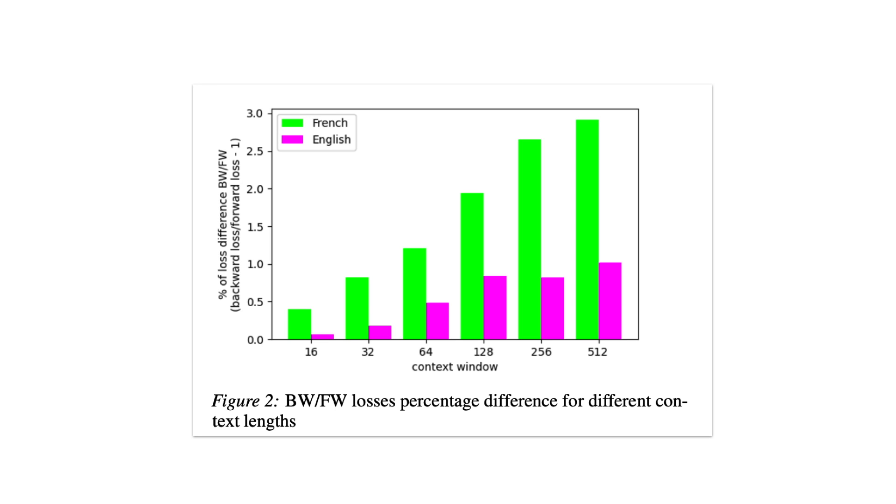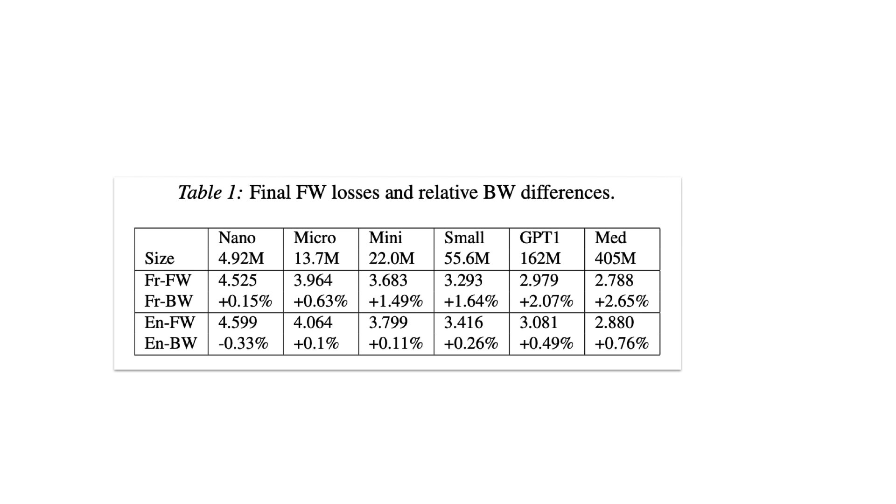And similarly, we can look at different model sizes. As with context size, larger models exhibit a stronger arrow of time effect than smaller ones. A higher-capacity forward model can evidently fit the data better than a backwards one of identical capacity. And the same effect is seen for other sequence model architectures like GRUs and LSTMs.